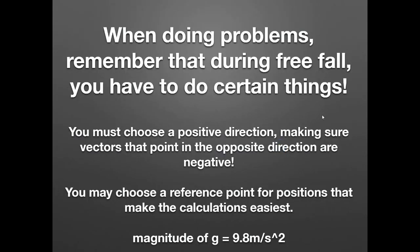Keep these things in mind when doing free fall problems: you have to choose a positive direction, making sure that vectors pointing in the opposite direction get negative values. You can also choose a reference point for your positions that makes calculations easiest. Remember that the magnitude of acceleration due to gravity, g, is 9.8 m/s². That's the end of unit two on one-dimensional kinematics. Thank you so much for watching — the next unit on two-dimensional kinematics is coming soon. This is Falconator signing out.